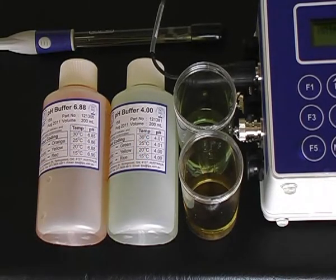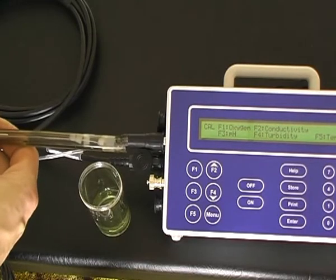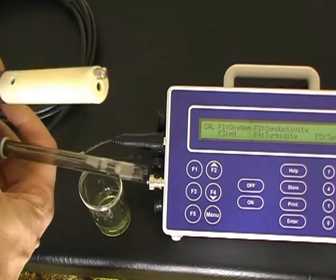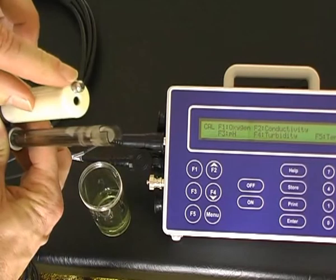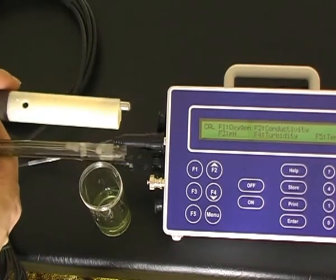I've poured those solutions into another jar so that we can place the sensor in there for calibration. Ensure the sensor is submerged at least 30 mm in that solution. To calibrate the pH sensor, you must also include the conductivity sensor, which has a temperature sensor on the end of it. Both sensors must be in the solution at the same time.